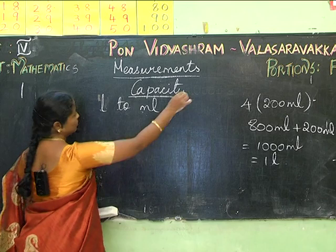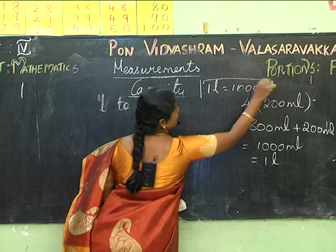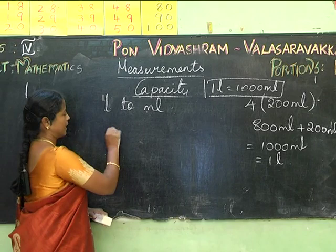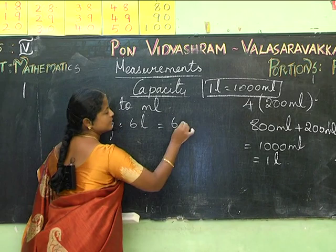Converting from liters to milliliters: 1 liter equals 1000 mL. For example, if I have 6 liters, then 6 × 1000 = 6000 mL.